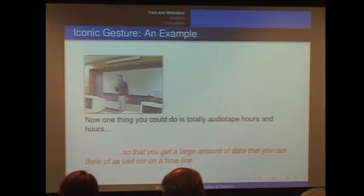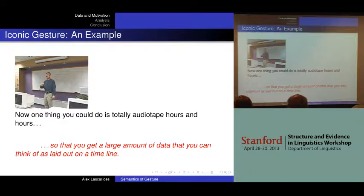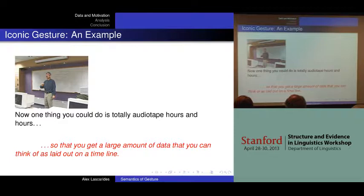In the next bit: 'Now what he could do is totally... of audio tape. Hours and hours.' So he lays out the data in his gestural space on a timeline. A different cue phrase here — 'so that' instead of 'because' — but again, the content of the gesture, like in the prior example, is not redundant. It is contributing something that's not expressed in the speech, but related to what's expressed in the speech.